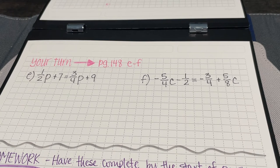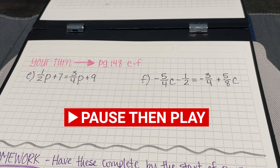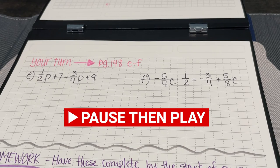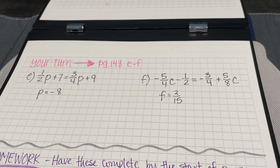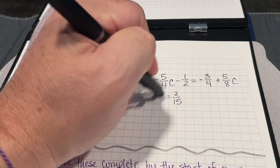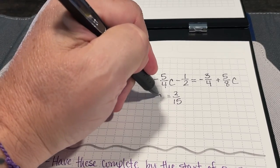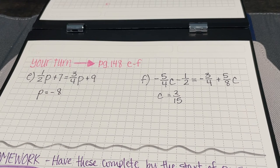If you feel like you need some additional practice before moving on to the assignment, why don't you try problems E and F on page 148. Pause the video here, work on those problems, come back to the video and see how you did and I will reveal the answers in just a second. The solution for E is P equals negative eight and the solution for F is, oh it's not F, it's C, is C equals two-fifteenths.